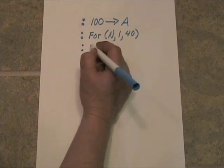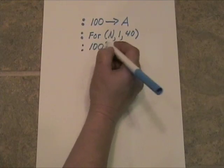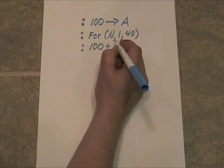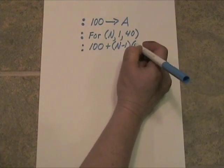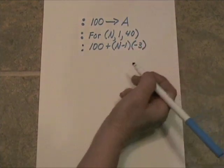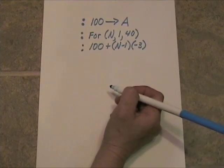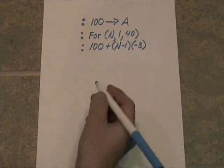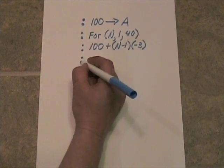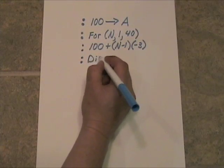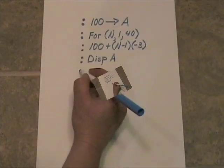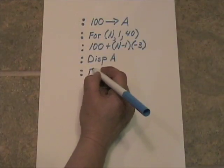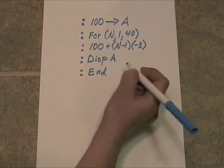The formula, the explicit formula, is quite simply: 100 plus the quantity (N minus 1), close quantity, times negative 3. And then we want to display A on the screen, and then we want to end the program.